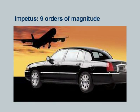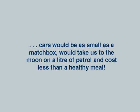Why do we need Python? If you look at technology and how it has evolved — from a car to an airplane, there is probably an order of magnitude speed difference. Cars travel about 100 kilometers per hour and a plane travels about 1000 kilometers per hour. But computers have changed by 9 orders of magnitude, not 1. If cars had evolved the same way as computers, they would be as small as a matchbox, would take us to the moon on 1 liter of petrol, and cost 50 rupees. Computers have completely changed everything — the way we do science, engineering, and solve problems.